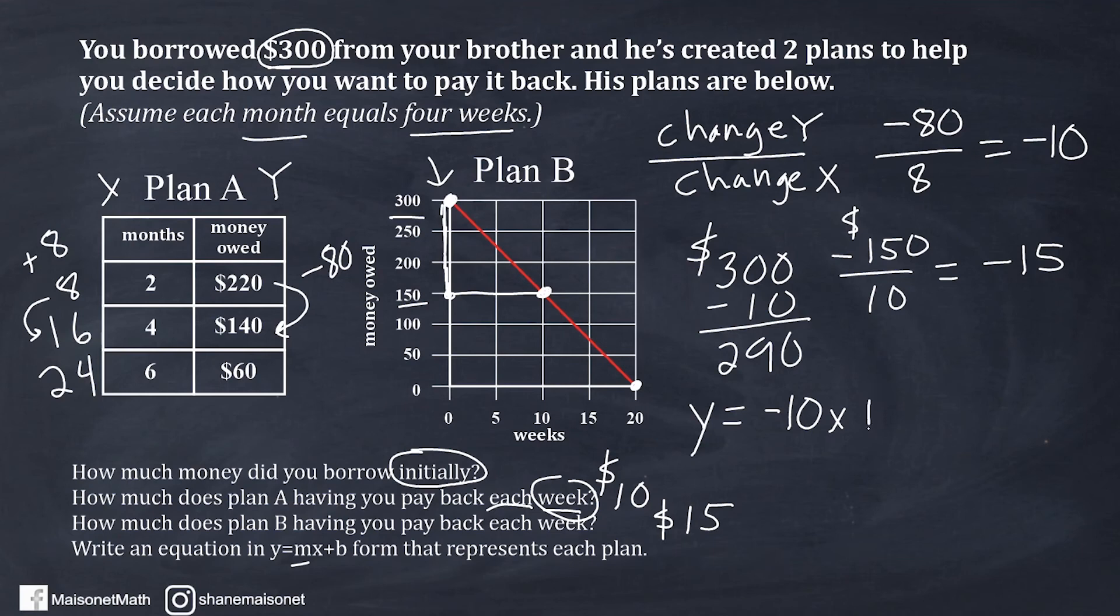And the Y intercept just means how much you actually started out with, which is $300. So this 300 is positive because that's what you owe your brother. That's the balance you owe. Now, as you start paying off $10 a week, all you would do is multiply negative 10 by the number of weeks, which would give you a negative value. And once you add it to the 300, you would get a number that's smaller than 300 until ultimately you arrive at $0 that you would owe your brother.